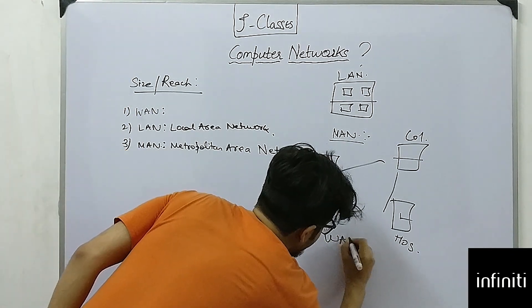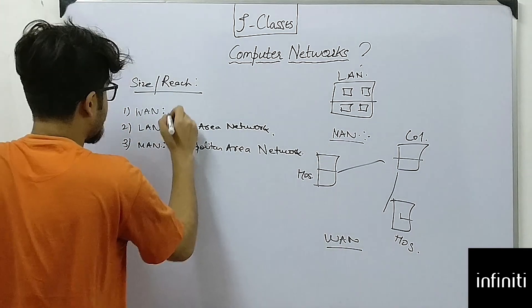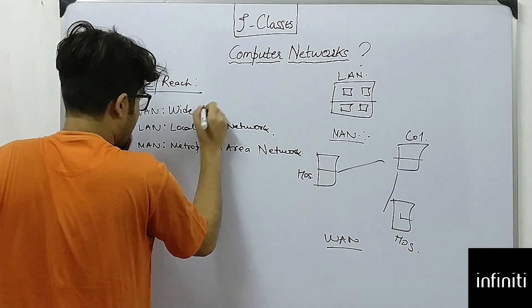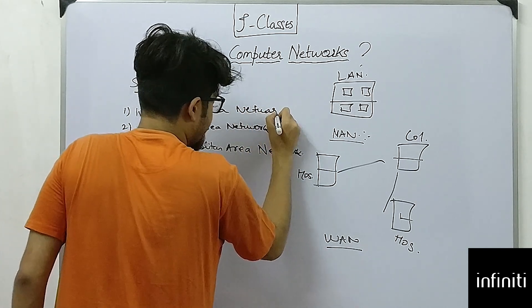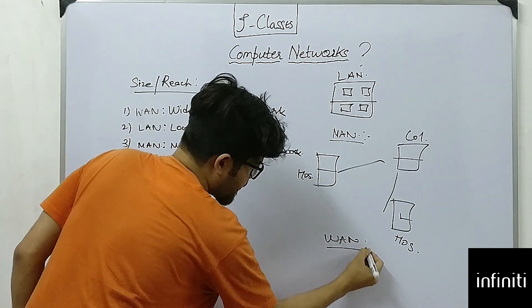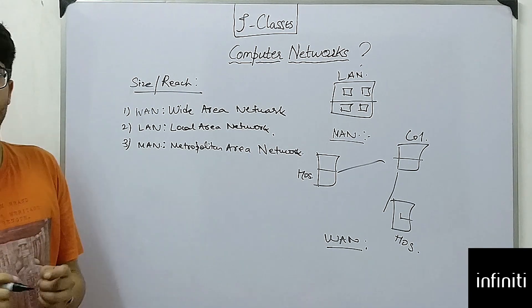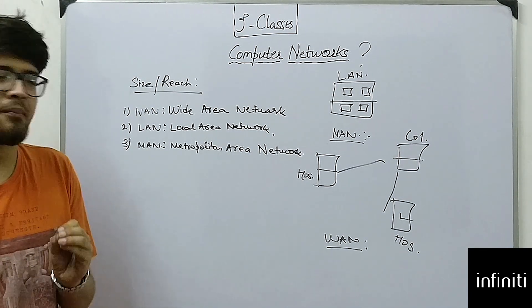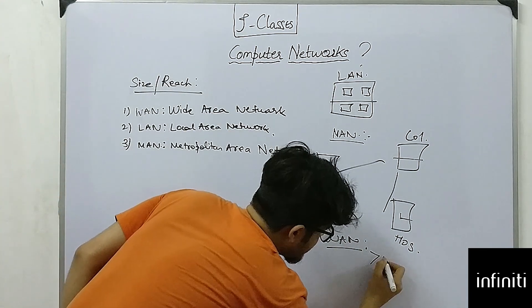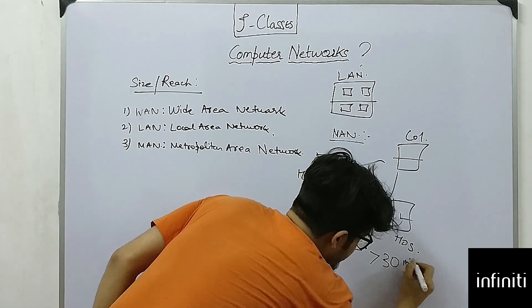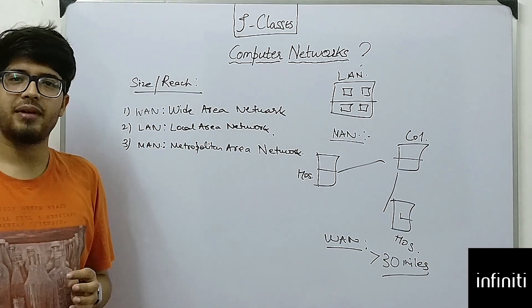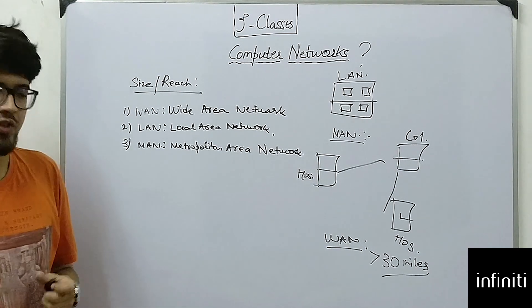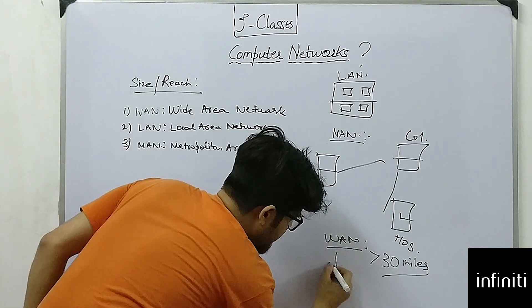Next comes wide area network. The basic criteria for wide area network is that the distance must be greater than 30 miles. So any network spreading over a distance greater than 30 miles will be termed as wide area network. The biggest example for this is the internet.